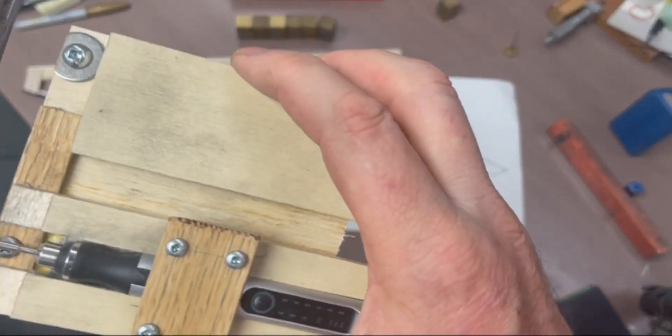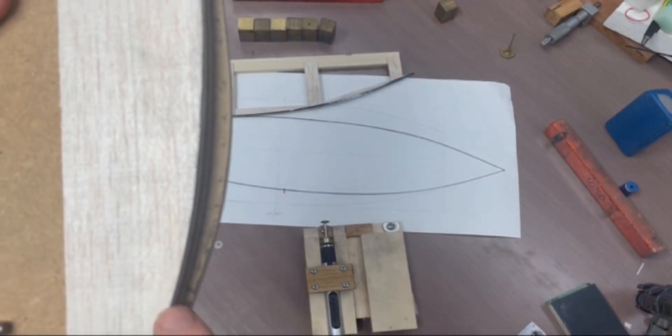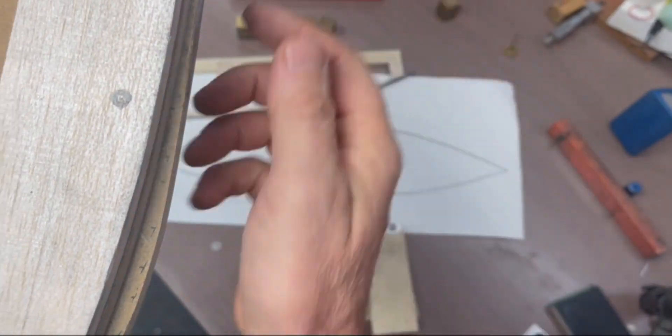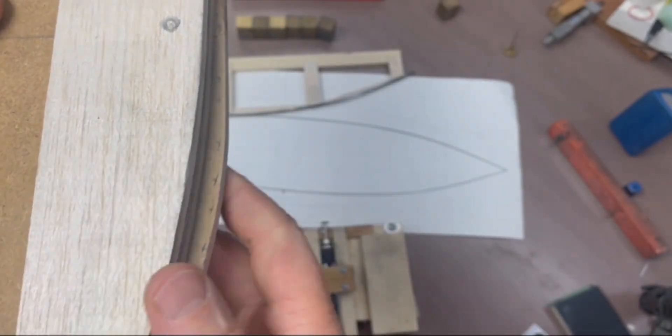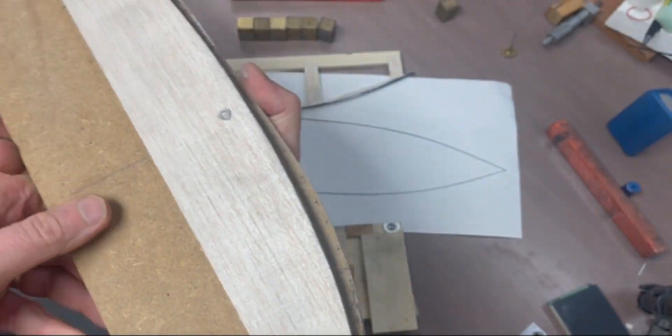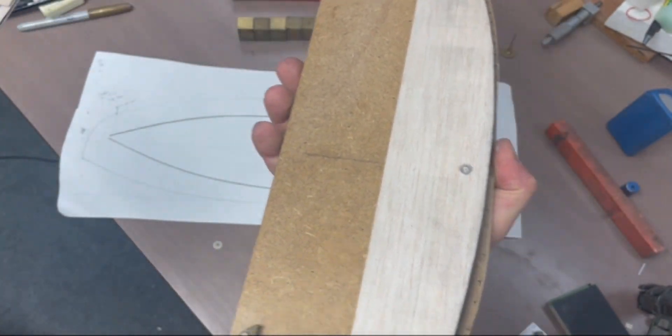This seems to work well. It is just a little bit of work to find this curve. Then this is just a filler block with balsa wood on which I lay the laminate.